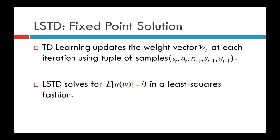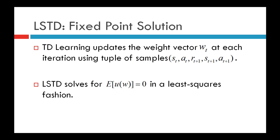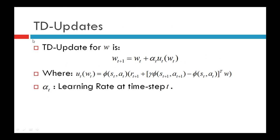TD learning updates the weight vector W_T at each iteration using the tuple of samples (S_T, A_T, R_{T+1}, S_{T+1}, A_{T+1}), where these samples are obtained using policy pi. At each iteration the algorithm computes the TD update U_T — defined as phi(S_T, A_T) times R_{T+1} plus gamma times phi(S_{T+1}, A_{T+1}) minus phi(S_T, A_T) transpose W — and updates the weight vector as W_{T+1} = W_T plus alpha_T times U_T(W_T).